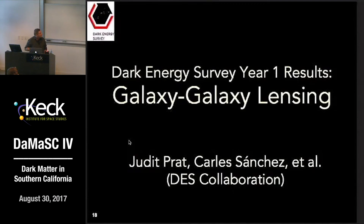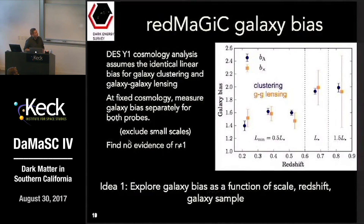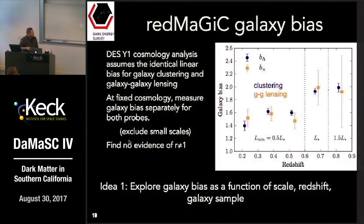The first dark matter idea I want to pitch involves extending the galaxy-galaxy lensing analysis. We can study galaxy bias of the RedMagic clustering sample as a function of redshift using two methods: galaxy clustering and galaxy-galaxy lensing. If your dark matter model predicts a certain bias dependence as a function of galaxy sample, scale, or redshift, you can replace the galaxy sample we chose and study the galaxy bias evolution as a function of redshift.